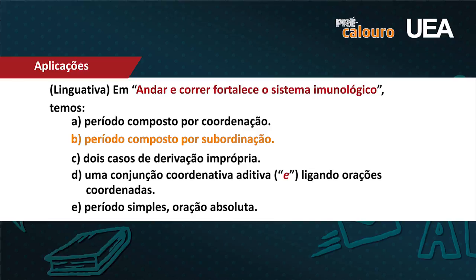A letra C fala em dois casos de derivação imprópria — não, a derivação imprópria é quando os verbos viraram substantivos no período anterior. A letra D: uma conjunção coordenativa aditiva ligando orações coordenadas — não, porque os dois verbos são orações subordinadas, coordenadas entre si. O 'e' não tem o papel só de ligar orações coordenadas; ele pode ligar substantivos, adjetivos e, como você acabou de perceber, ligar também duas orações subordinadas.